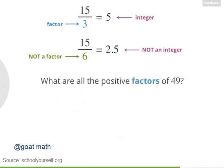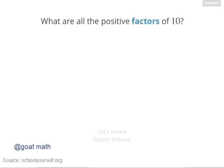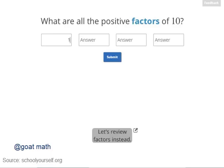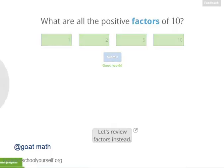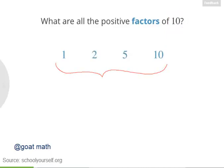Okay, last question. What are all the positive factors of 49? Can you find all 3 of them? To get started, go ahead and list all the positive factors of 10. Can you find all 4 of them? Right, so one way to find the factors is to look for pairs of numbers that multiply to 10. So that's 1 and 10, and 2 and 5. So these are all the factors of 10.